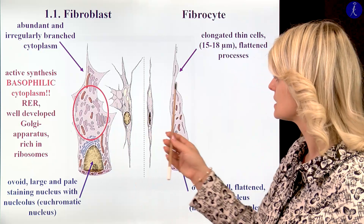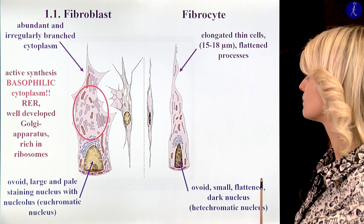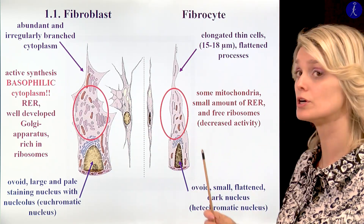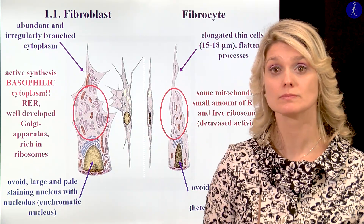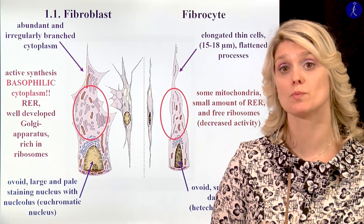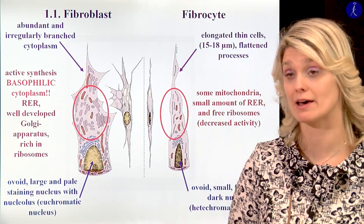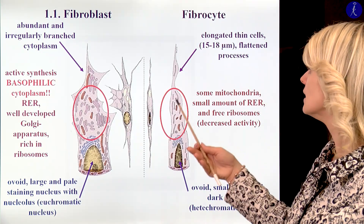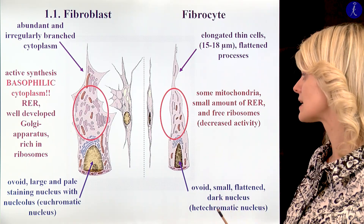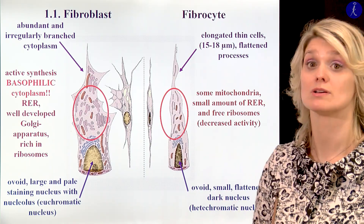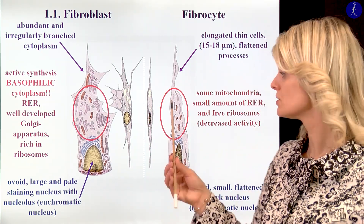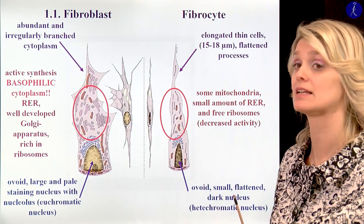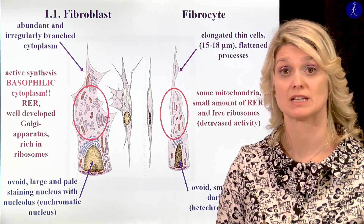If you see the cytoplasm of the fibrocytes, they are smaller with not so much rough endoplasmic reticulum, fewer free ribosomes, and some mitochondria. So here we can see very well the difference between the cells.